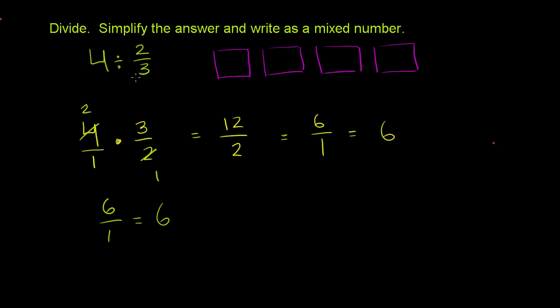And you could view 4 divided by 2 thirds as let's divide these 4 boxes into groups of 2 thirds of a box and figure out how many groups do we have.